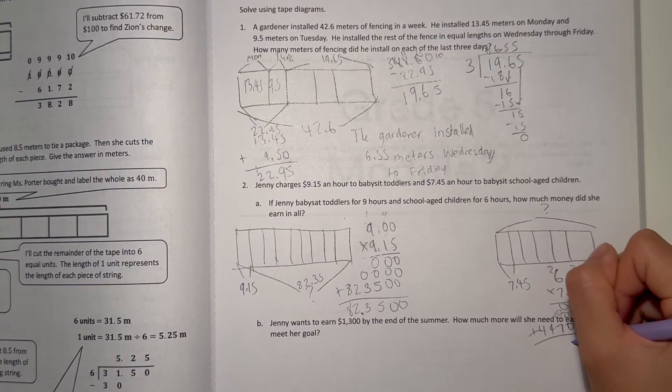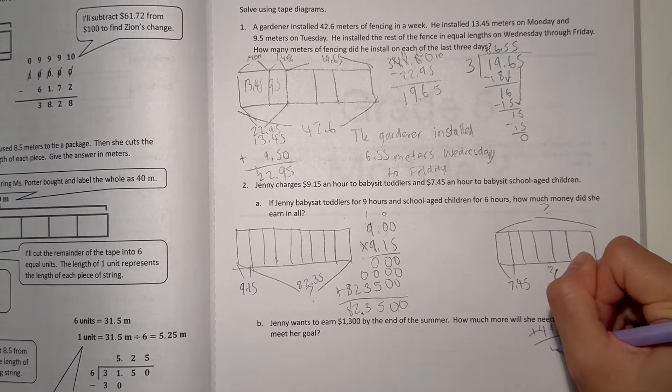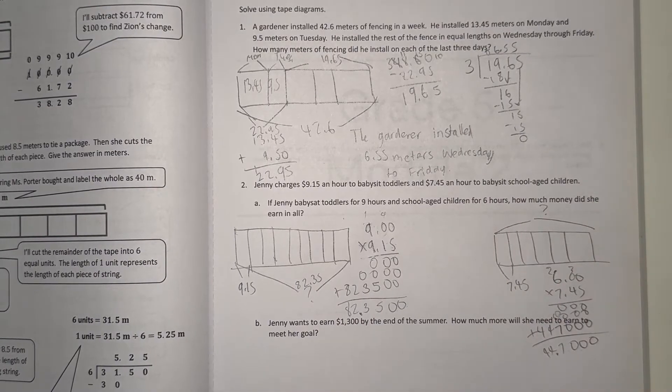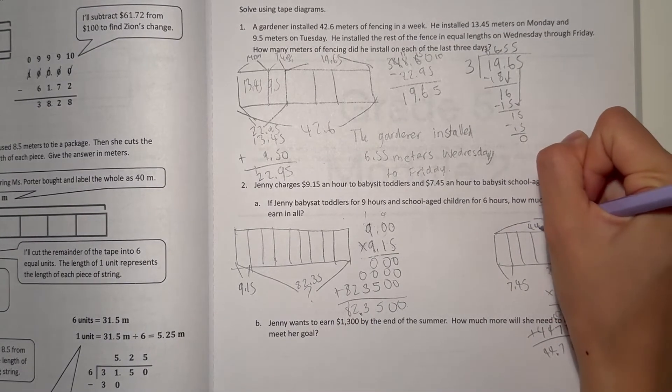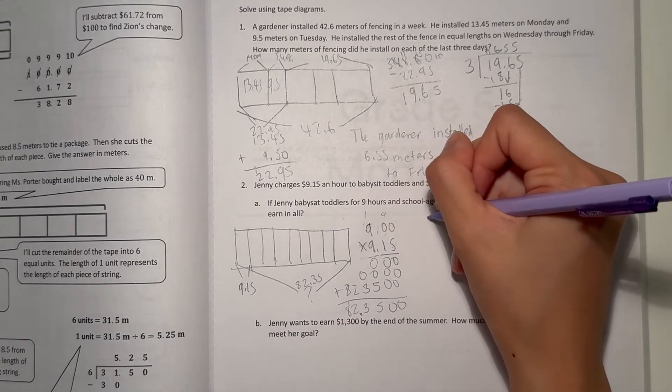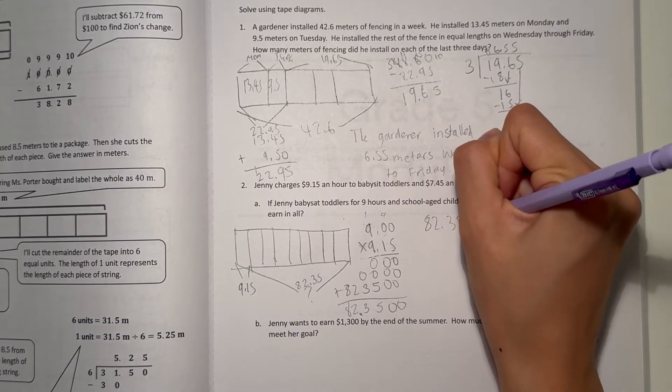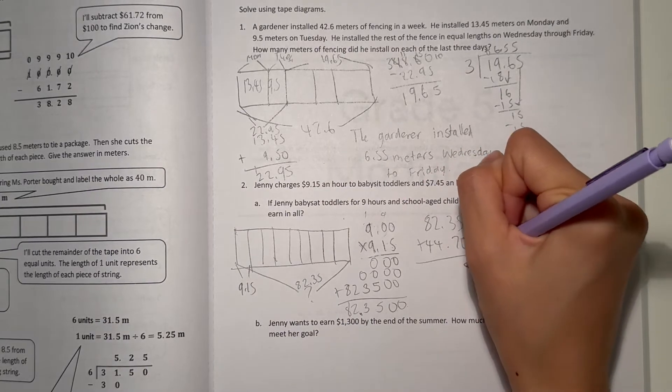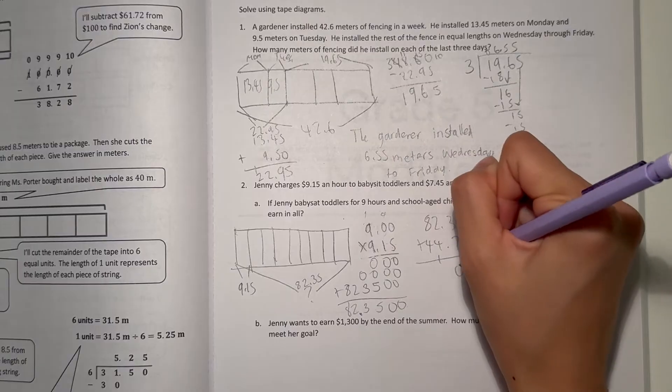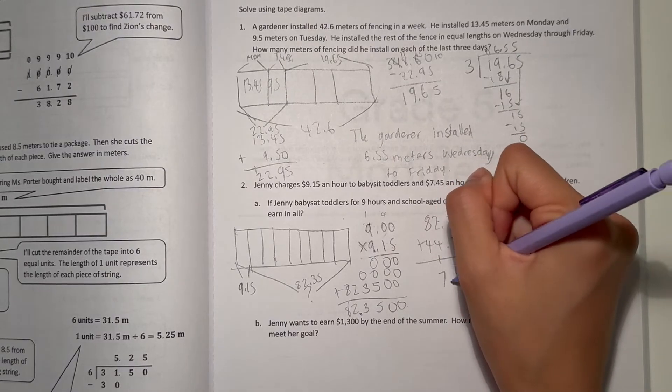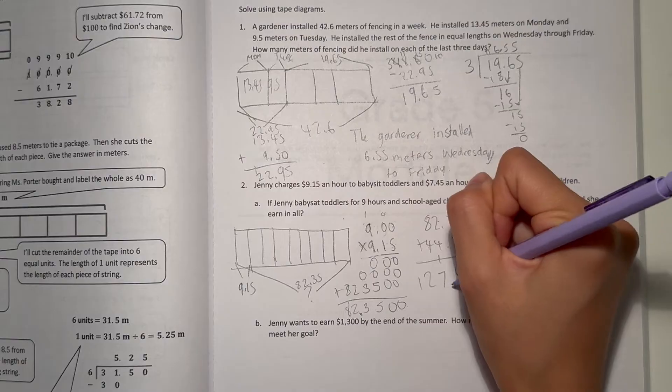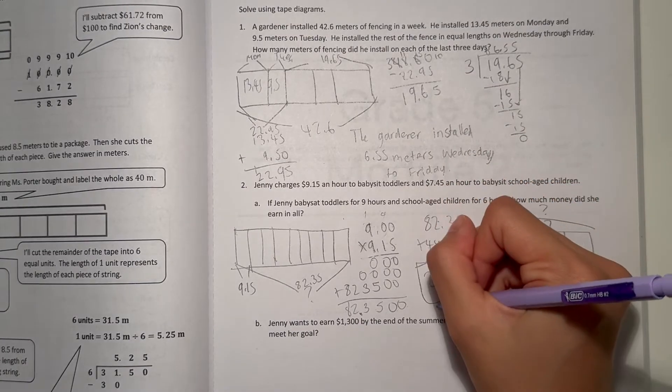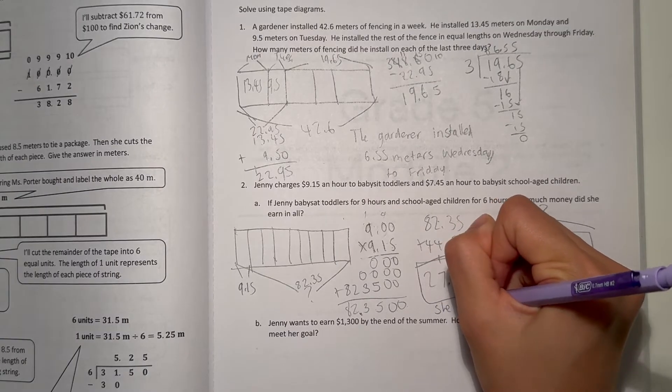So our answer is 44.70, so $44.70. How much does she earn in total? Well, 82.35 plus 44.70: 5 plus 0 is 5, 3 plus 7 is 10, 4 plus 3 is 7, and 8 plus 4 is 12. Our answer is $127.05. That's how much she makes.